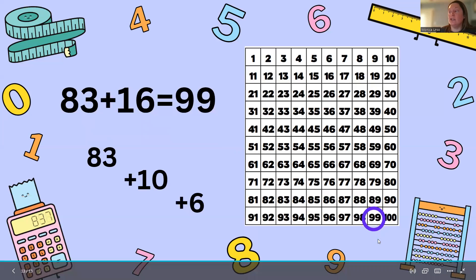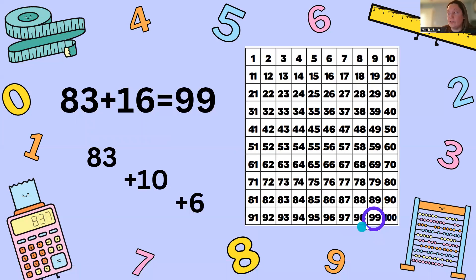Now to check. Did you start with the correct number of 83? Did you add one row for 10 and did you move to the right six?